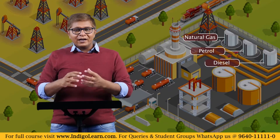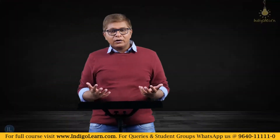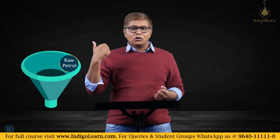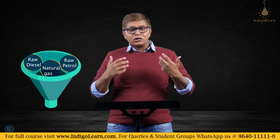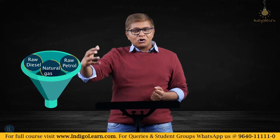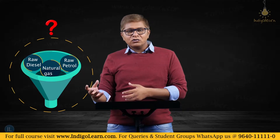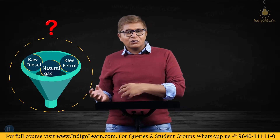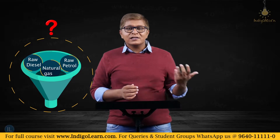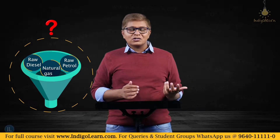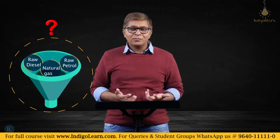But when I look at the output, I have more than one output — raw petrol, raw diesel, natural gas, LPG, and so on. The question is: whatever cost we incurred for the crude oil processing, should I transfer it to raw petrol, raw diesel, LPG, or natural gas? Where should I transfer this cost, and how much should each output take? This becomes a problem.